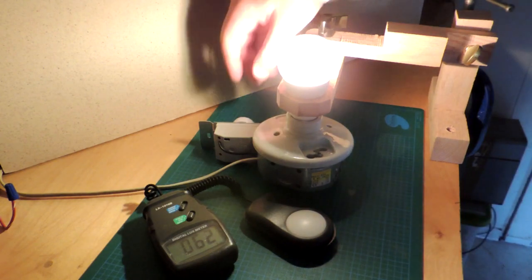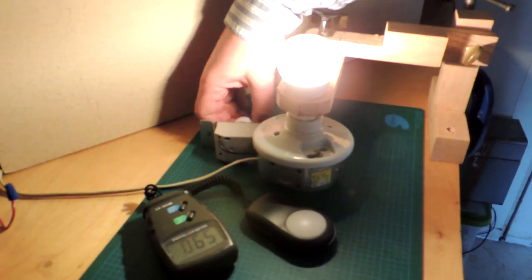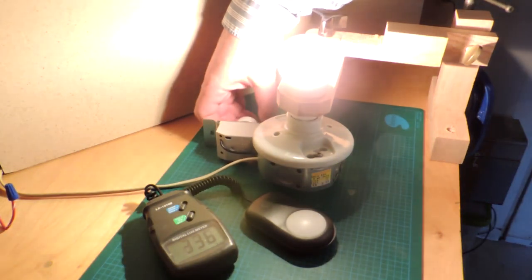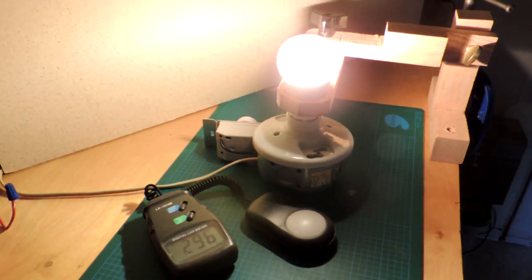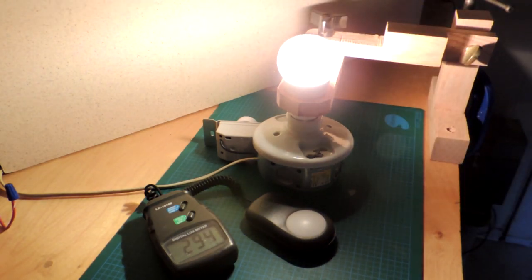First up we have the standard dimmer and you see for example light meter reads between 65 and 300 and something. Which obviously is clearly the bulb is dimmable. We'll switch over though to the LED based dimmer and we'll see that range is actually quite a bit wider.